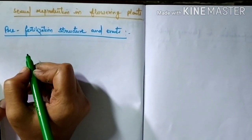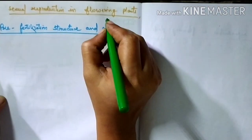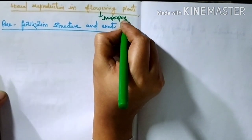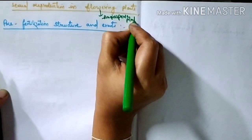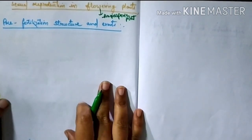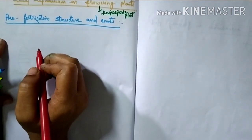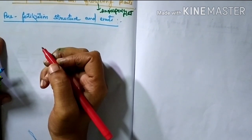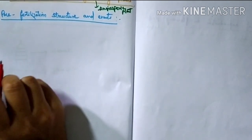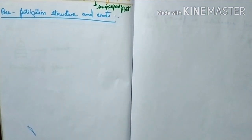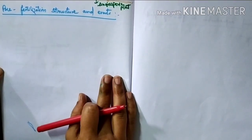Today's topic is sexual reproduction in flowering plants, meaning angiospermic plants. We will look at the pre-fertilization structures and events. Fertilization means the fusion of male and female gametes during sexual reproduction. The process which occurs before fertilization is called pre-fertilization, and we will see what structures and events are present before fertilization.